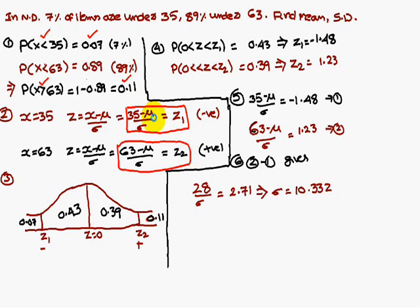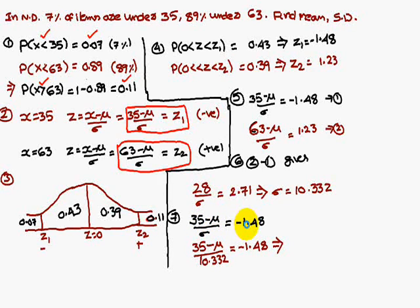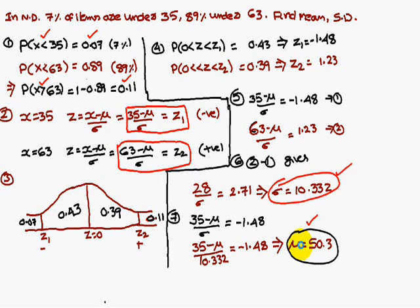To find the mu value, use the equation (35 − mu) / sigma = −1.48. Substituting sigma = 10.332: (35 − mu) / 10.332 = −1.48. Simplifying gives mu = 50.3. So the mean is 50.3 and the standard deviation is 10.332, which is what was asked.